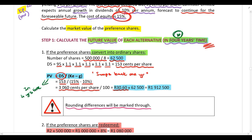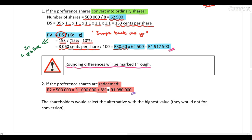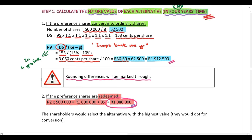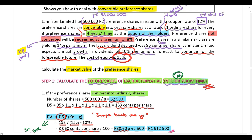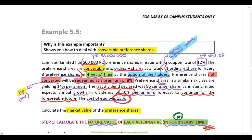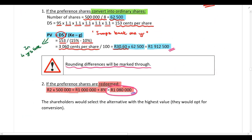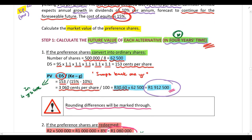Those 62,500 ordinary shares will be worth R30.60 each in four years' time, giving a total value of R1,912,500. Note that any rounding differences in your calculation will be marked through. The conversion alternative is worth R1,912,500 and the redemption alternative is R1,080,000. Since this is at the option of the holder, the holder selects the alternative with the highest value — they would opt for conversion, not the lower value of redemption. Step one is done.